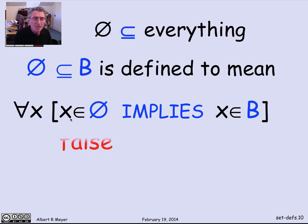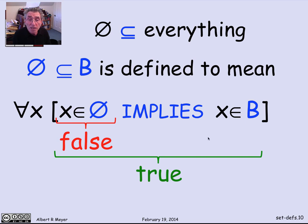Well, what do we know about this? The assertion that x is in the empty set is false. No matter what x is, there's nothing in the empty set. And now I have an implication where the left-hand side, the hypothesis, is false. That means that the whole implication is true, and it doesn't depend on what B is.